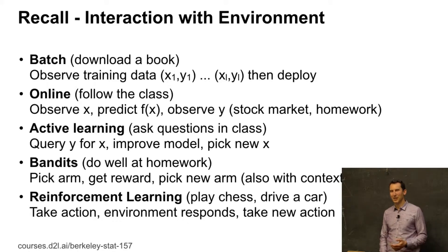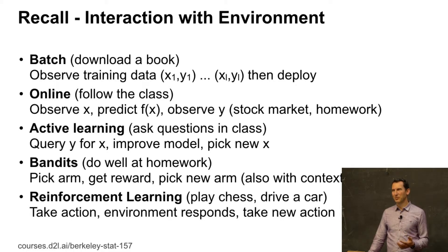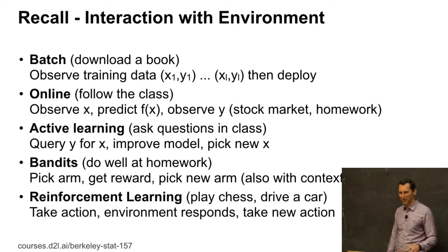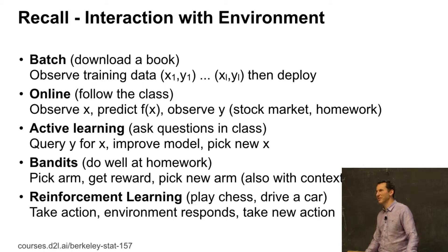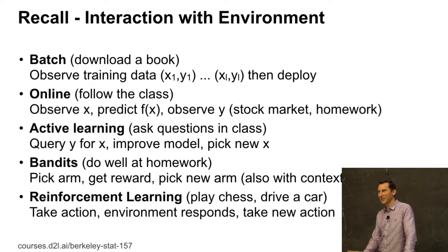In computational advertising, you may care about doing things online because the fresher your model is, the more money you make. That's why there's a significant premium on being able to respond very quickly to how things change. For example, there was once a large advertising company that didn't have a very popular consumer electronics device in their inventory for a non-trivial amount of time — and that was probably an expensive keyword to be missing.